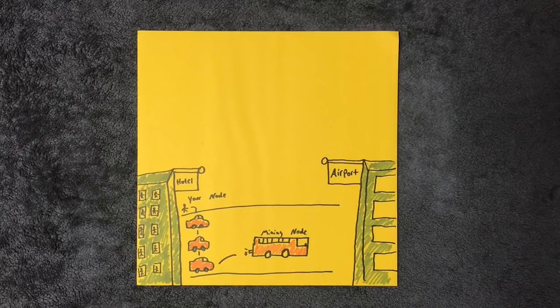People think that their nodes are helping to secure the network, but they're not. Like the taxi, they are just sitting there waiting. Without the hash power, your node acts like it was never there.